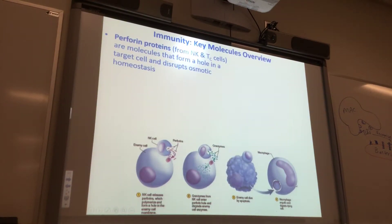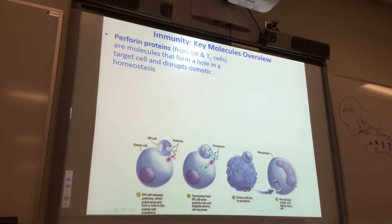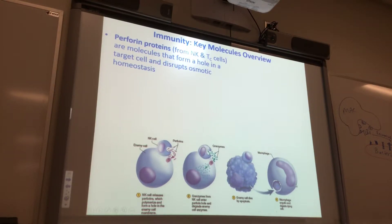More molecules — remember, we're not on cell types. Make your list: these are all cells in the immune system, these are all molecules in the immune system. Key molecules continued: for foreign proteins we've already talked about these. Perforins are molecules that form a hole in the target cell, and then it disrupts osmotic homeostasis. Perforins alone — if you didn't have granzyme to do apoptosis and you just put in perforins —